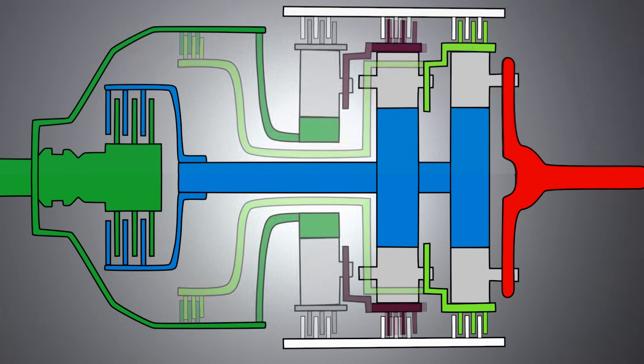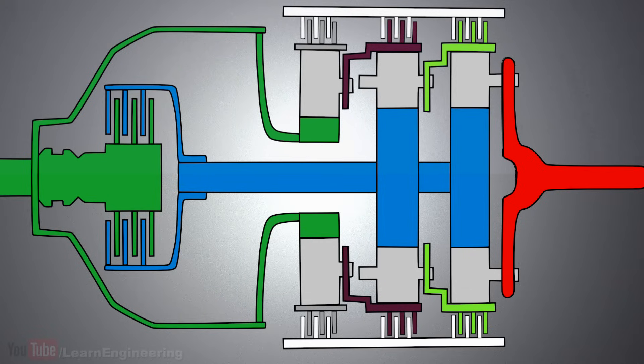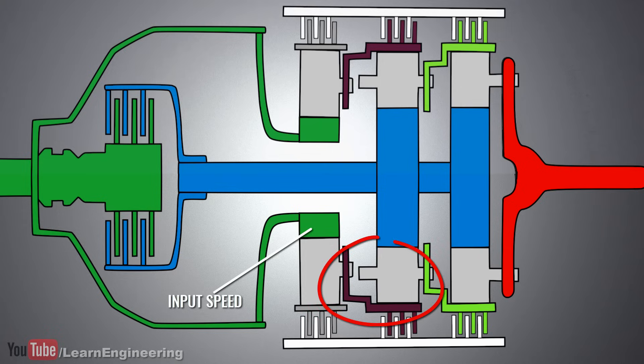One more gear set is used to obtain the remaining gear ratios. However, the sun gear of this set is not connected to the shaft. Instead, it is connected to the rotating clutch module. So, this sun gear will always turn at the input speed. And here again, the output of the set is connected to the input of the adjacent set.